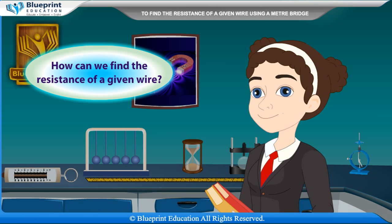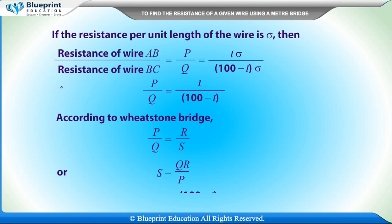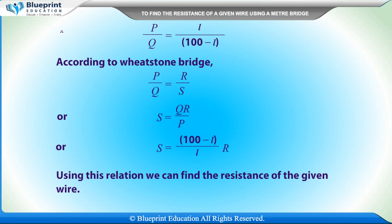Question: How can we find the resistance of a given wire? If the resistance per unit length of the wire is σ, then resistance of wire AB divided by resistance of wire BC gives P/Q = Lσ / (100−L)σ = L/(100−L). From the balanced bridge condition, P/Q = R/S, so S = QR/P, or S = [(100−L)/L] × R.